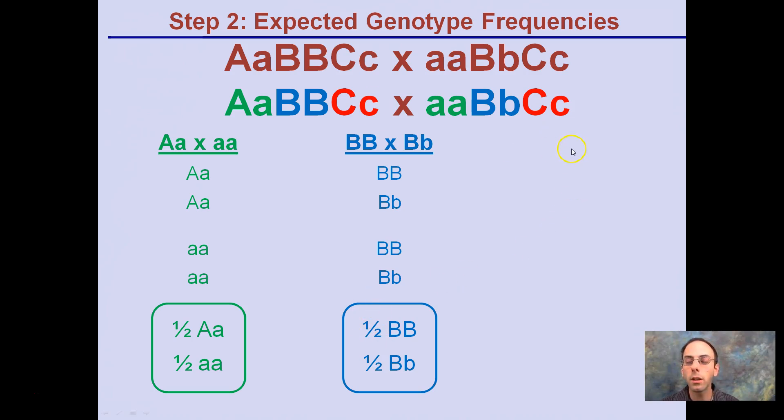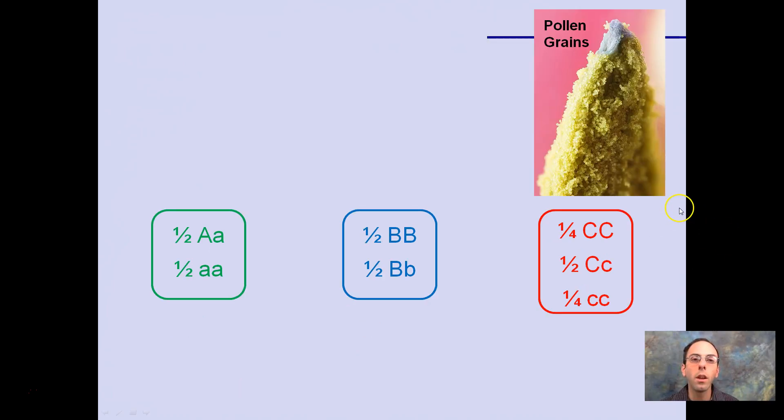C's get a little more complicated because we're both heterozygous. So if we look at the C's now, we cross two of our heterozygous C's. We have a quarter being homozygous dominant, half being heterozygous, and a quarter being homozygous recessive. Okay, so now what do we do with this? Let's go to the next step.